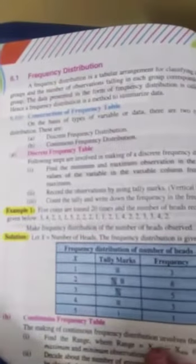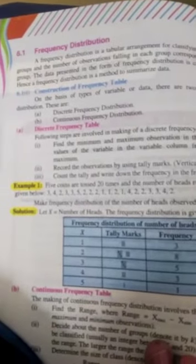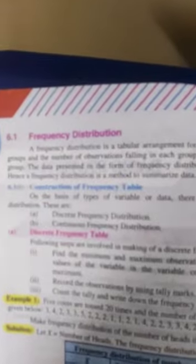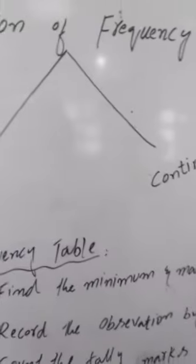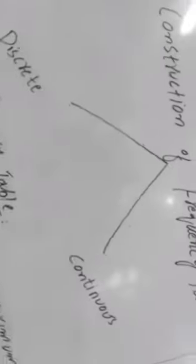Frequency Distribution is a tabular arrangement. We have data given, and that data we have to arrange in tabular form. Frequency Distribution is of two types: one is Discrete Frequency Distribution, and the second is Continuous Frequency Distribution.